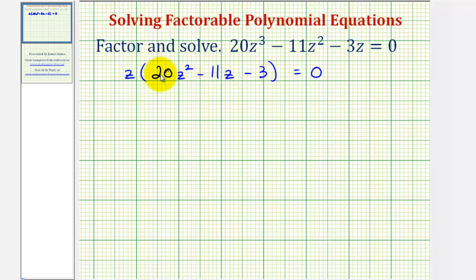And there are no common factors among the three terms. So we need to factor the inner trinomial by using either trial and error, grouping, or bottoms up. Let's use trial and error.